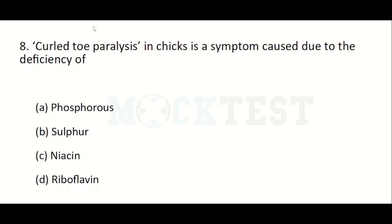Curl-toe paralysis in chicks is a symptom caused due to the deficiency of: Option A: phosphorus. Option B: sulphur. Option C: niacin. Option D: riboflavin. The answer is Option D, riboflavin.